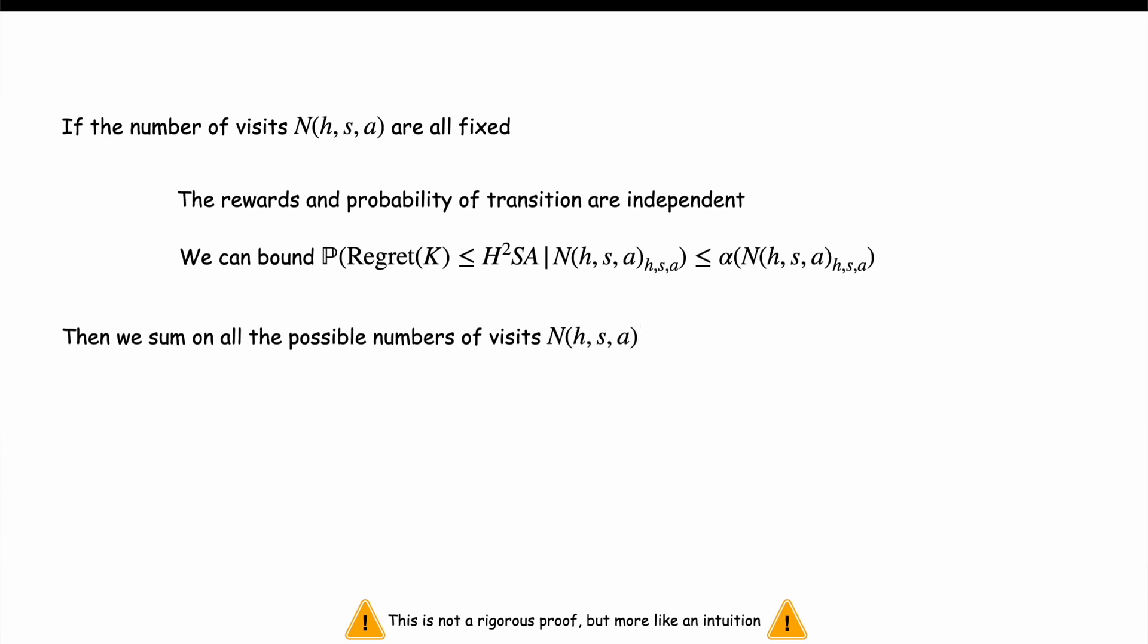But remember that capital K is the large one here and the red sum on k terms on the right is too large. So we only update the estimates at every power of 2 and therefore we no longer need to bound the regret term for each value of n of h s a but only for the powers of 2 and the sum only has now log k terms.